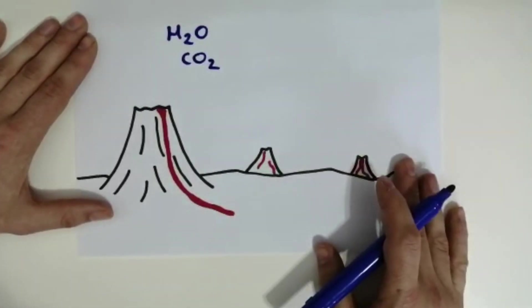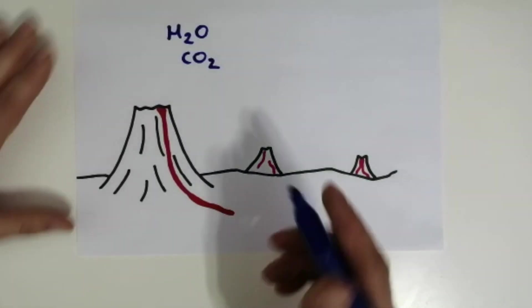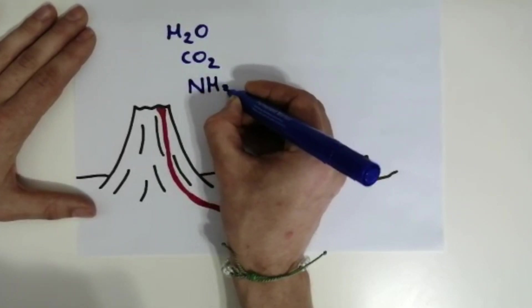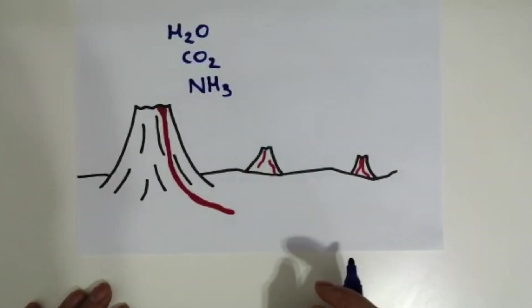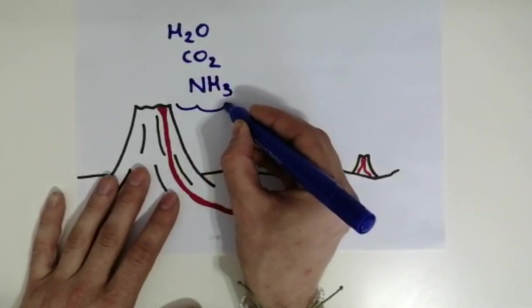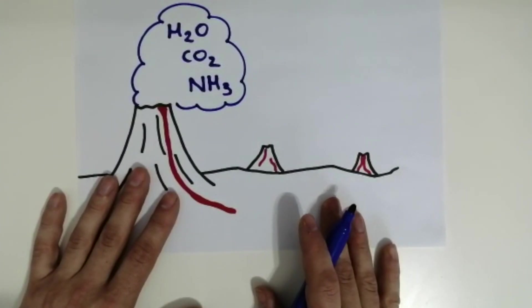Loads of it. Scientists think that at one point the Earth's atmosphere was likely around 95 percent carbon dioxide. And ammonia NH3. Now there were other gases believed to have come from volcanoes as well, but for the purposes of the WJEC specification we're going to focus on just those.